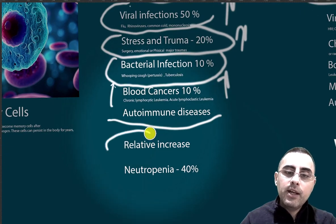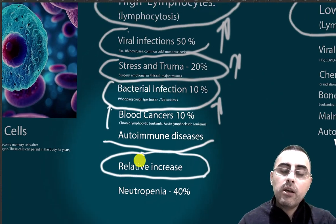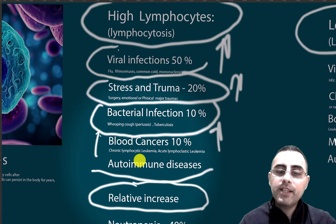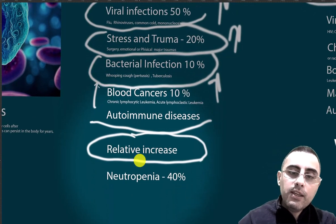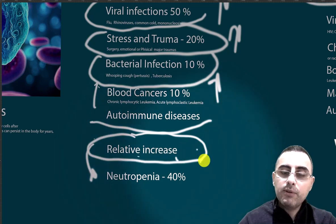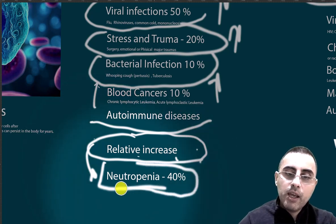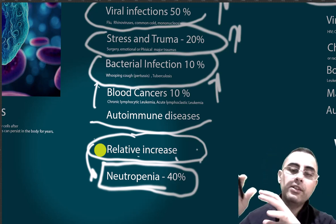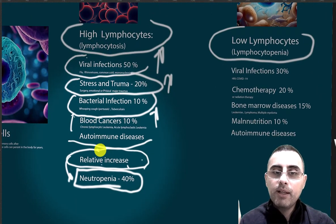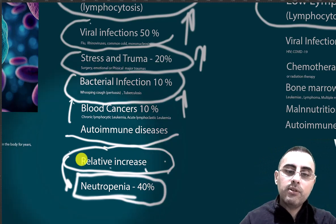We should also distinguish between relative and absolute increases in lymphocytes. Absolute means the total count of lymphocytes is increased. Relative means only the percentage of lymphocytes is increased — this is called a relative increase. It can be caused by neutropenia or severe infections, where neutrophils are low, making lymphocytes appear high even though their actual count may be normal.